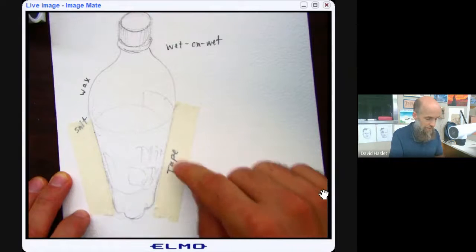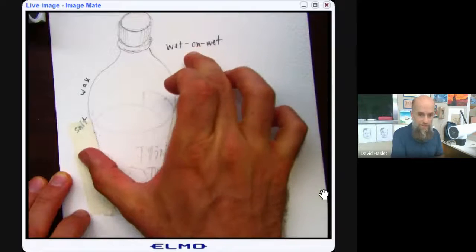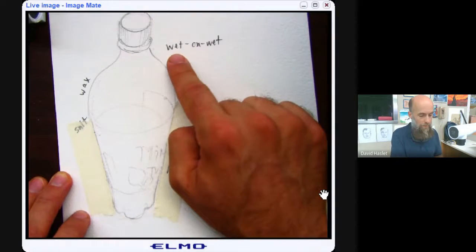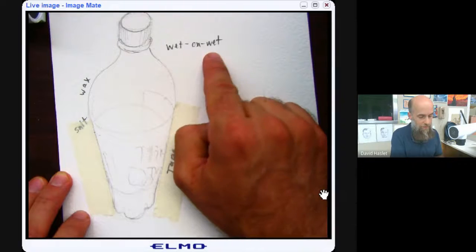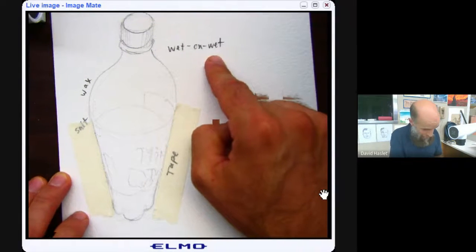Tape, done. Wax, done. Salt and wet-on-wet. Those two are related here, so wet-on-wet technique is simply this. It's a wet brush placed on wet paper. That's it. It just sounds a little fancier, I suppose, with the name.